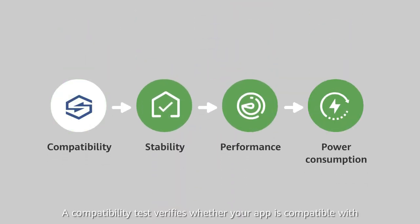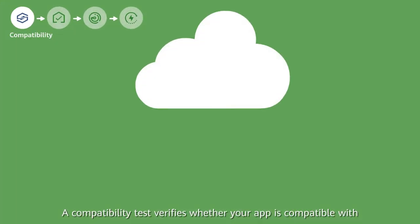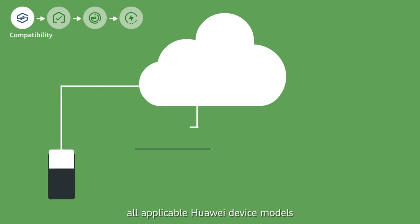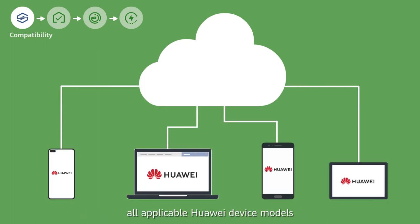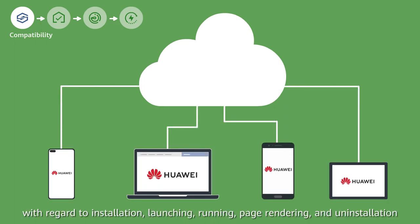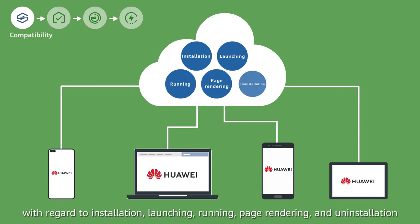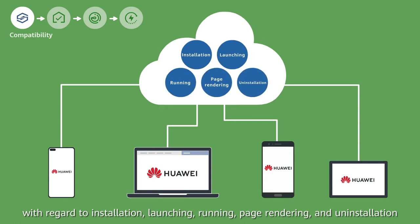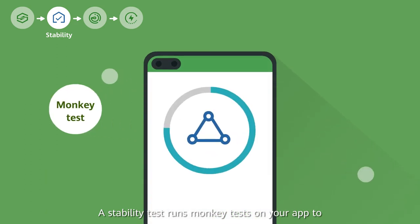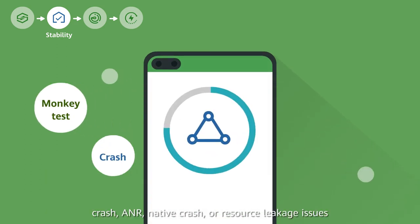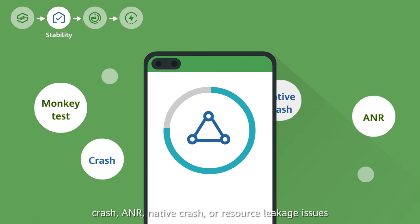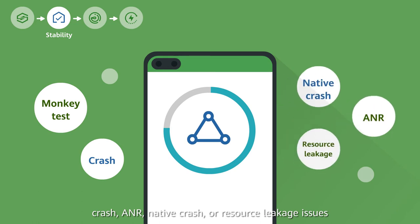A compatibility test verifies whether your app is compatible with all applicable Huawei device models, with regard to installation, launching, running, page rendering, and uninstallation. A stability test runs monkey tests on your app to determine whether it will face crash, ANR, native crash, or resource leakage issues when running for extended periods of time.